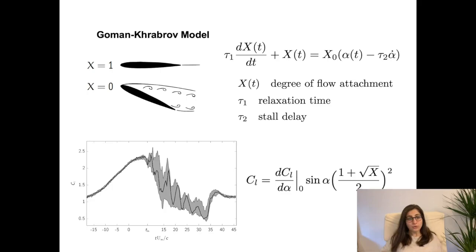For the modeling part, I am using Goman-Khrabrov model. It is a semi-empirical model, and it uses a single internal state variable x to represent the degree of flow attachment during the different stages of dynamic stall. As you can see in here, x equal to 1 represents the fully attached flow, and 0 corresponds to the fully separated stage. The state equation for x is determined by solving a first-order differential equation. In here, tau 1 and tau 2 are the two empirical time constants that correspond to the flow relaxation time for transition between separated and attached states, and then the time lag associated with the dynamic stall vortex formation that we call as the stall delay.